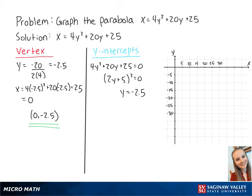Now we want to find the x-intercept, which is when y is equal to 0. So we set up the equation x equals 4 times 0 squared plus 20 times 0 plus 25, which gets us 25.